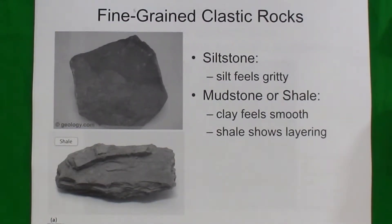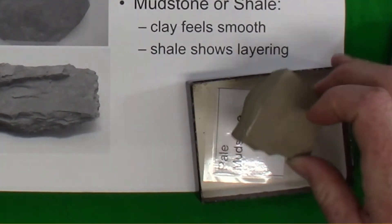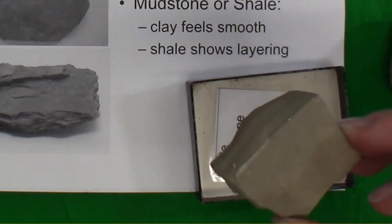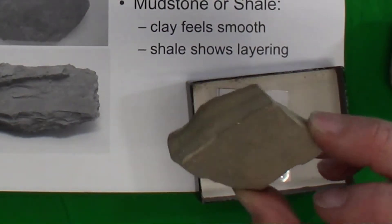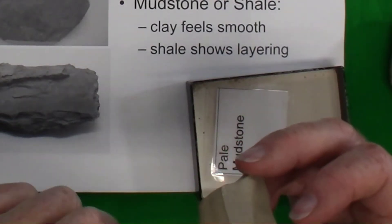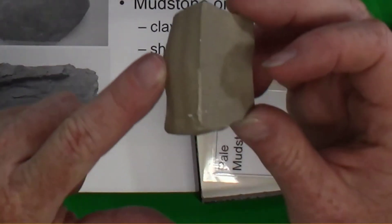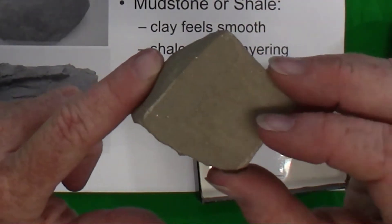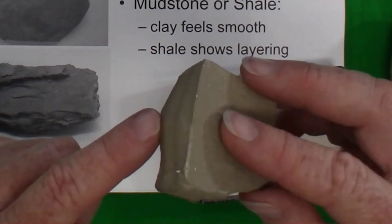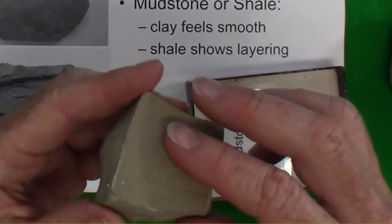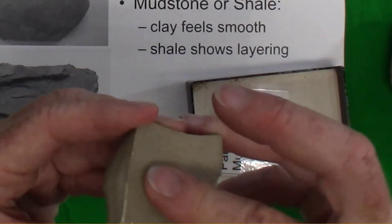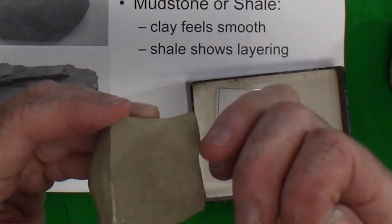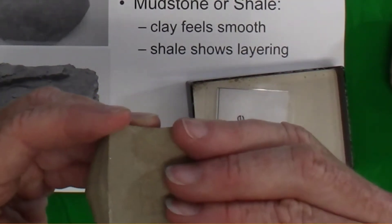Here are examples of fine-grained clastic rocks made predominantly of silt or clay. This is a shale, sometimes called mudstone, which is a clastic sedimentary rock made up of very fine, predominantly clay-sized particles. We cannot distinguish clay particles with the naked eye, but the rock will be fairly low density, pretty soft, and we could even scrape off some of the clay powder with our fingernails.